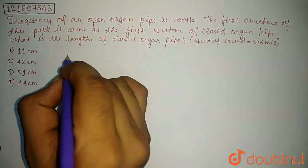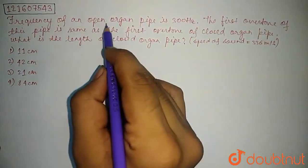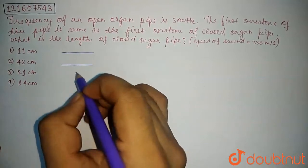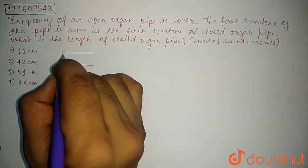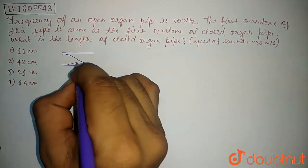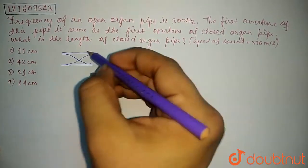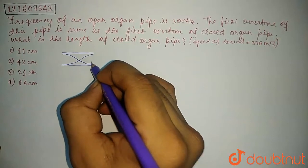The first thing is, frequency of an open organ pipe is 300 Hz. This means that this is the open end organ pipe, which is the natural frequency when it is in this configuration, and here the displacement is the maximum.